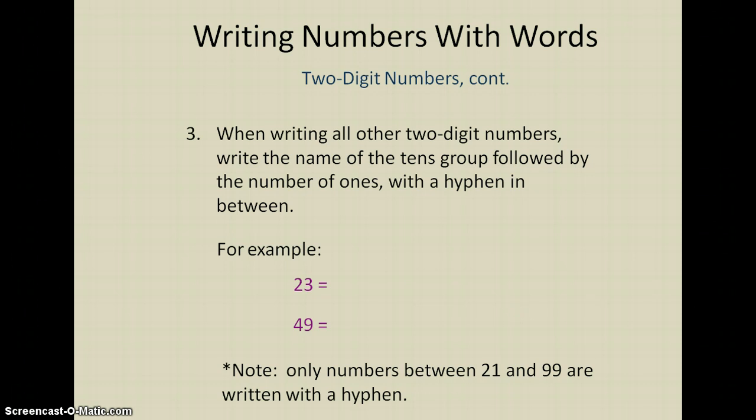One last thing with two-digit numbers is that when we write two-digit numbers, we write the name of the tens group and then follow it by however many ones there are. We always put a hyphen in between, and that's going to be true for every number between 21 and 99. So not for the teen numbers, but all of the other two-digit numbers 21 to 99 that have two parts are written with a hyphen.